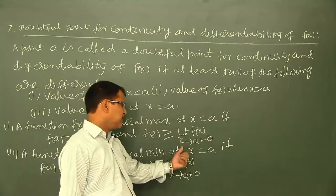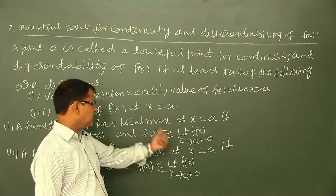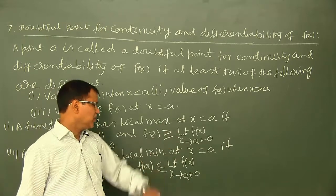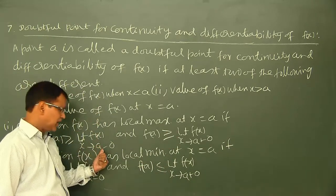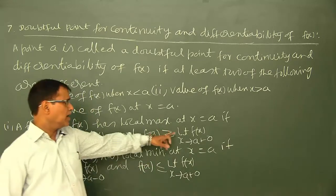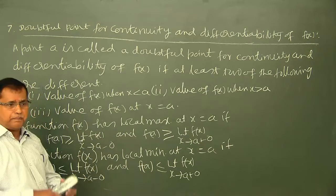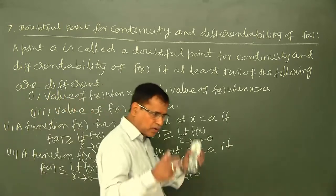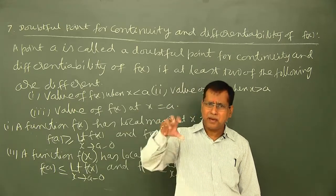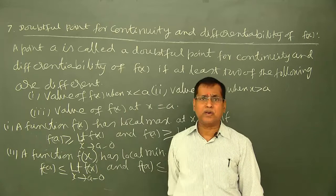Function کا limit extending to A نکالیں گے۔ Function f(x) has local maximum at x equal to A if f(A) is greater than or equal to the left hand limit of f(x) when x tends to A, and f(A) is greater than or equal to the right hand limit of f(x) when x tends to A. یعنی A پر function کا value local maximum ہوگا اگر وہ f(x) کے left hand limit اور right hand limit دونوں سے greater than or equal to ہو۔